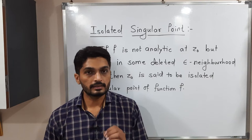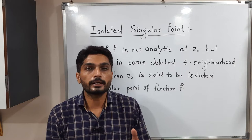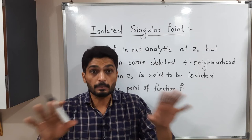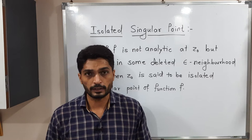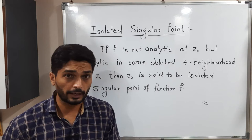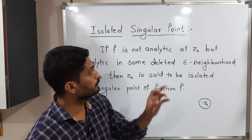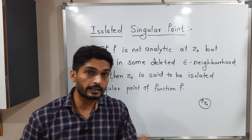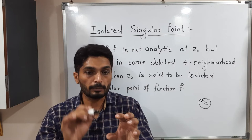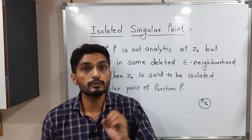Isolated means separate. So if two or more singular points are separate from each other, we call them isolated singular points. Mathematically, if a function is not analytic at z₀ — meaning z₀ is a singular point — but in some deleted epsilon neighborhood of z₀ the function is analytic, then we say z₀ is an isolated singularity. The deleted neighborhood means the center z₀ is removed from that neighborhood.